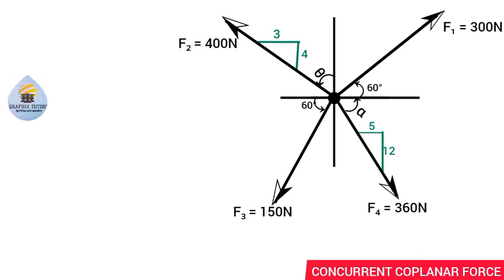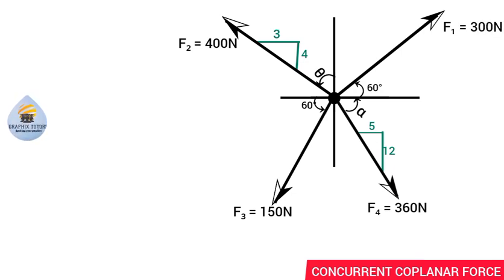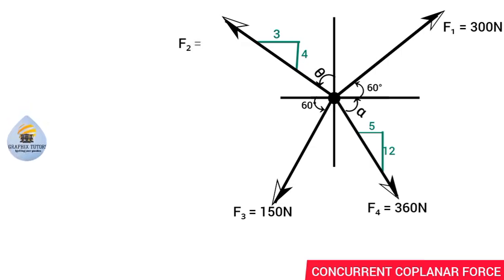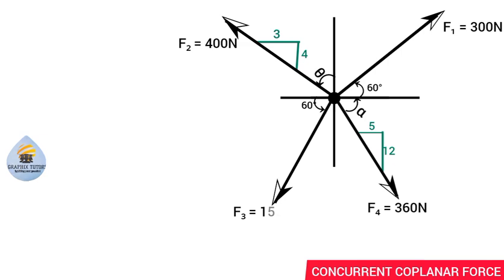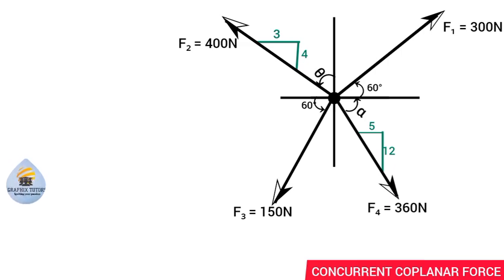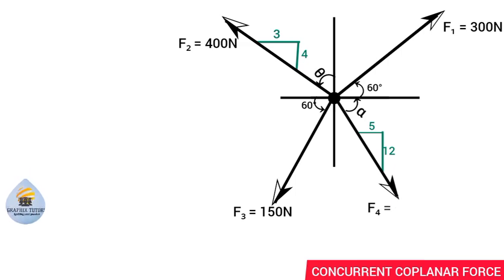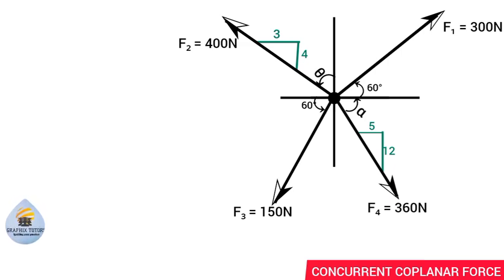This concurrent coplanar force has four different forces. F1 has a magnitude of 300 newton inclined at 60 degrees to the horizontal. F2 has a magnitude of 400 newton inclined at angle theta. F3 has a magnitude of 150 newton inclined at 60 degrees to the horizontal. F4 has a magnitude of 360 newton inclined at angle alpha to the horizontal. We need to find theta and alpha first.